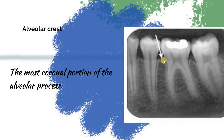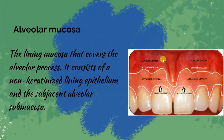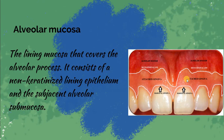Alveolar crest is the most coronal portion of the alveolar process. Alveolar mucosa is the non-keratinized part that covers the alveolar process, consisting of non-keratinized epithelium. It is separated from the attached gingiva through a mucogingival line.